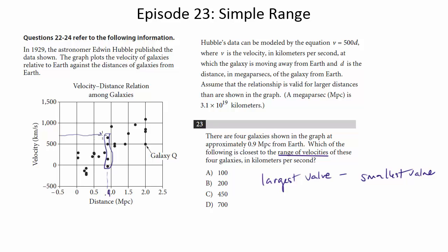The largest velocity is approximately 700-ish. The smallest velocity is actually negative because it's this one right here. It's below zero. Let's say, I don't know, negative 25.